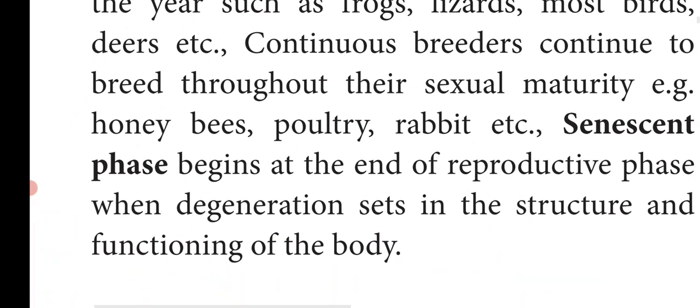Seasonal breeders reproduce only at a particular period or season. Continuous breeders, on the other hand, continue to breed throughout their sexual maturity. They don't have any particular period for breeding and continue to breed throughout the year. Examples: honeybees, poultry, rabbit, etc.